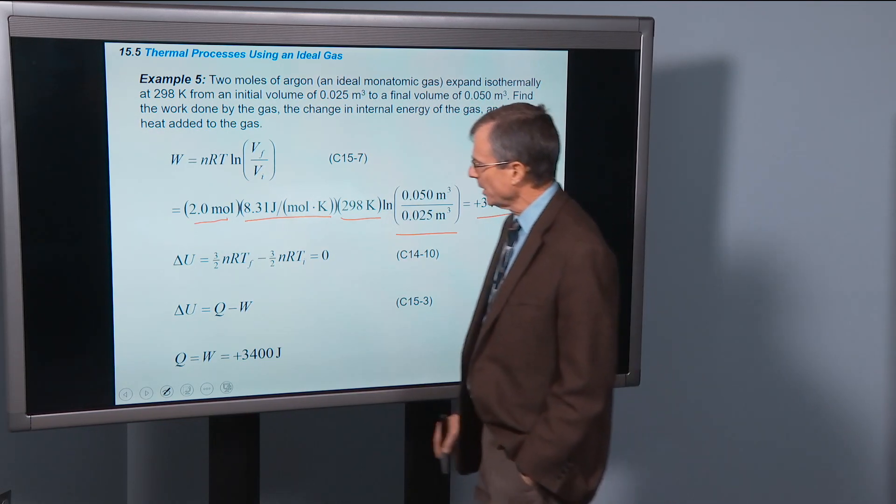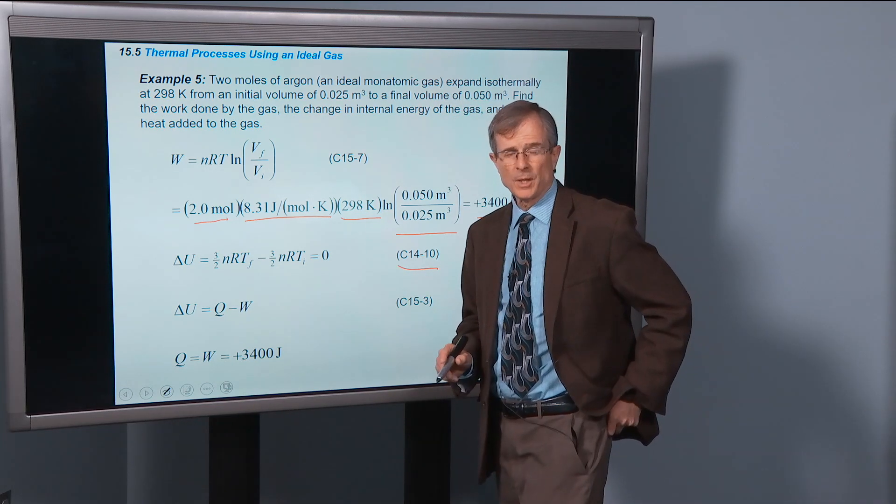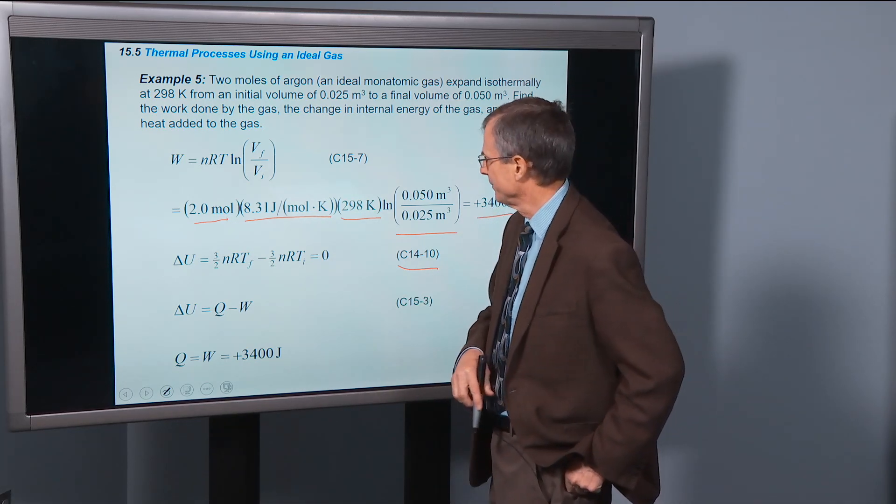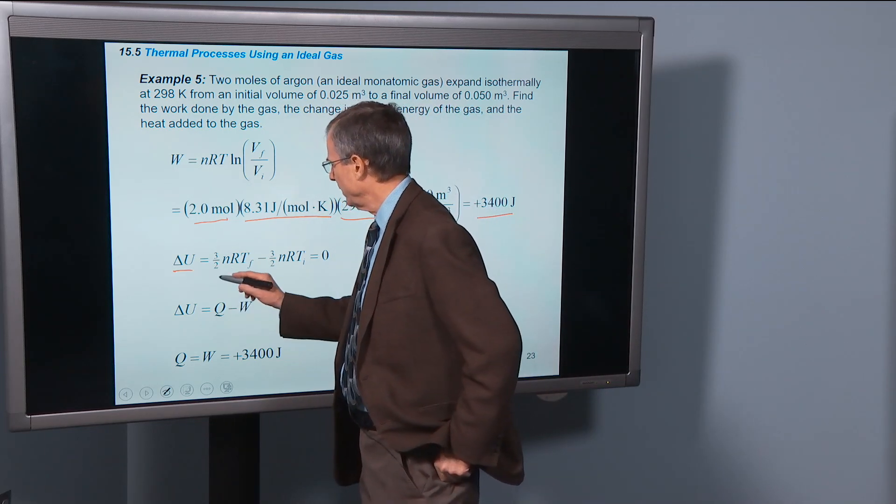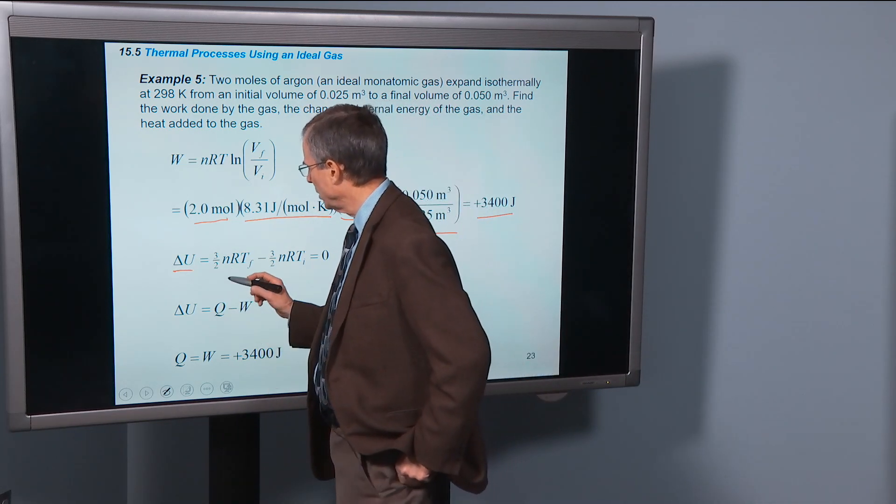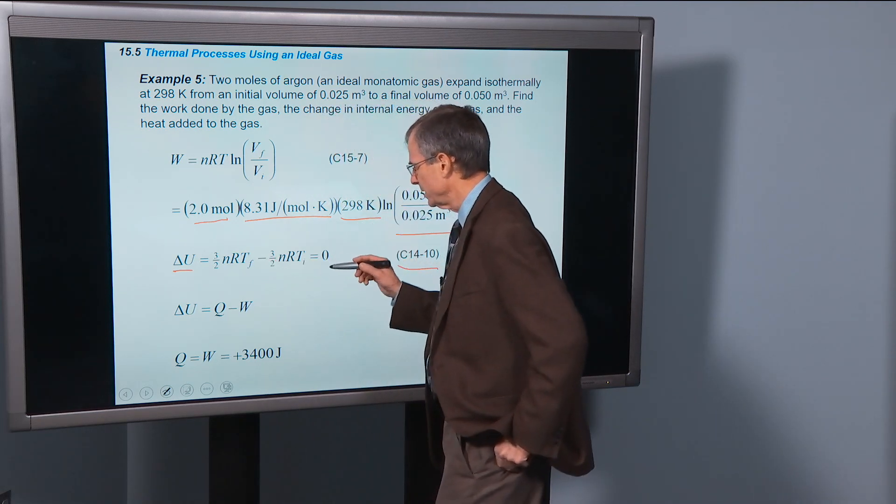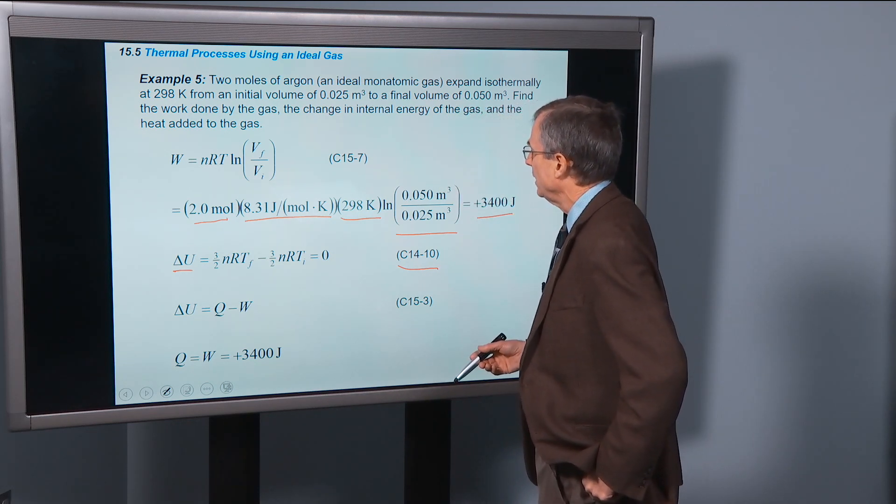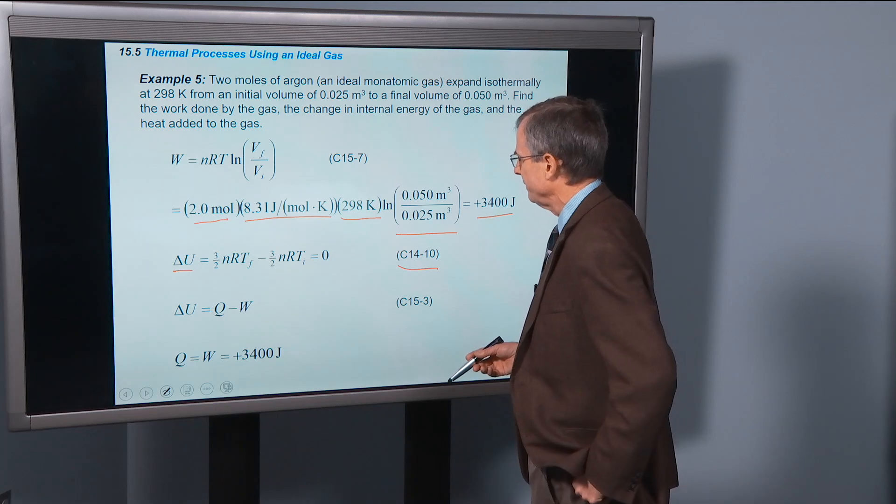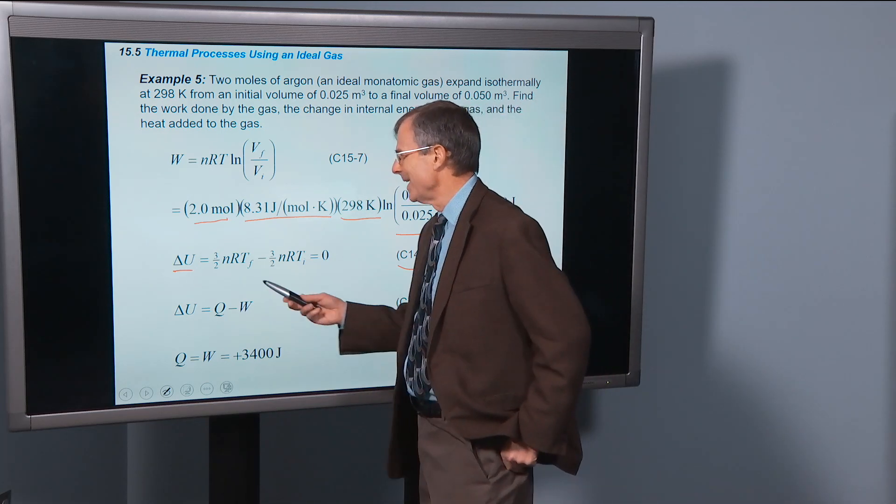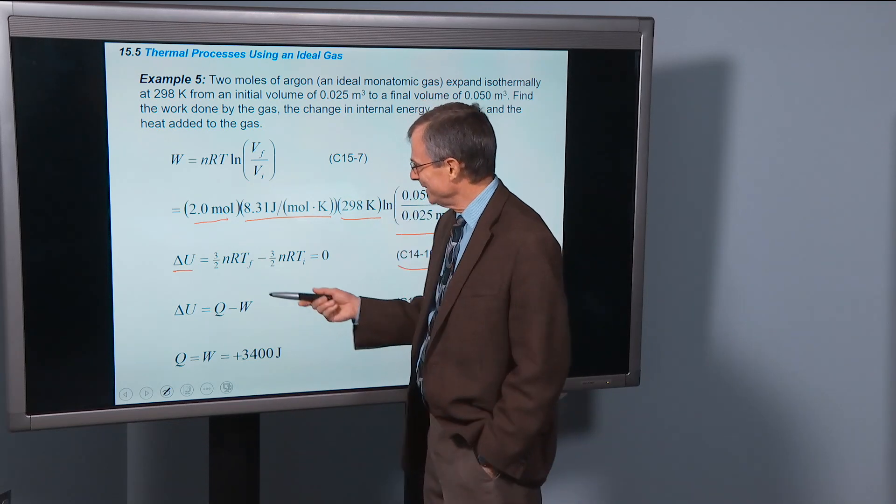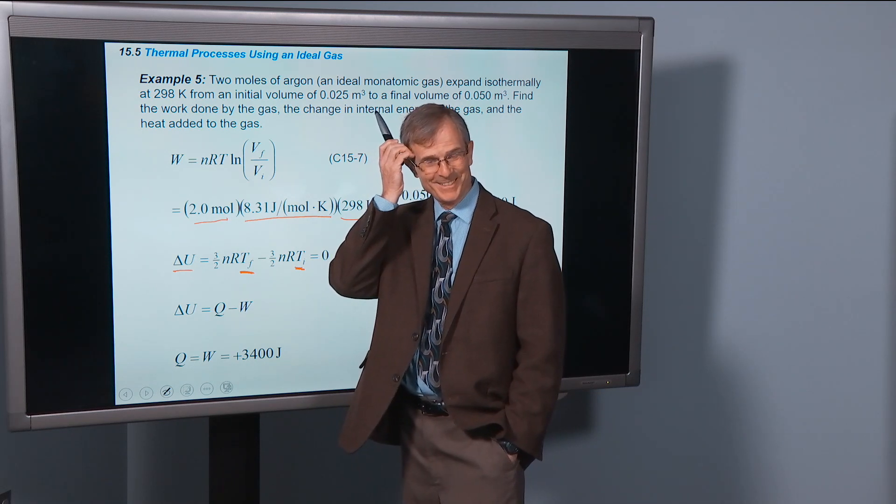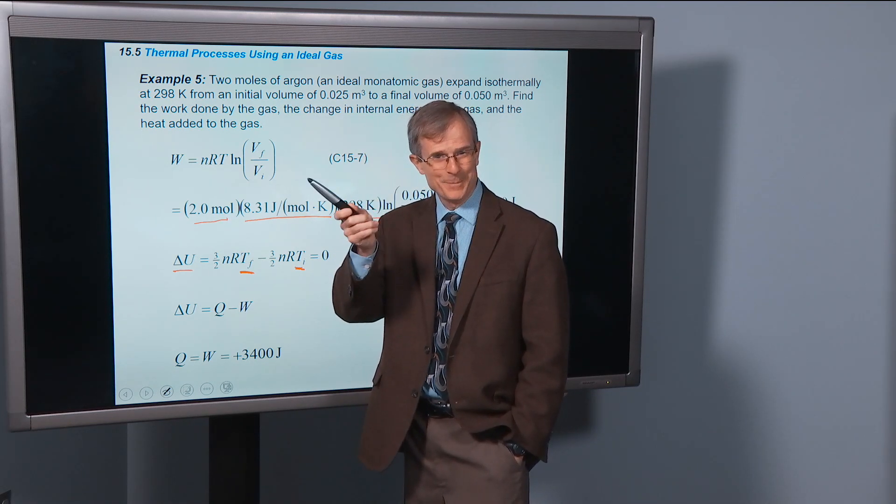The change in the internal energy, how do we do that? Well, concept 1410 says that the internal energy is 3 halves nRT for an ideal monatomic gas. The change in the energy is 3 halves nRT final minus 3 halves nRT initial. But the final temperature, how does that relate to the initial temperature for an isothermal process? They're the same, aren't they? Because it's isothermal.